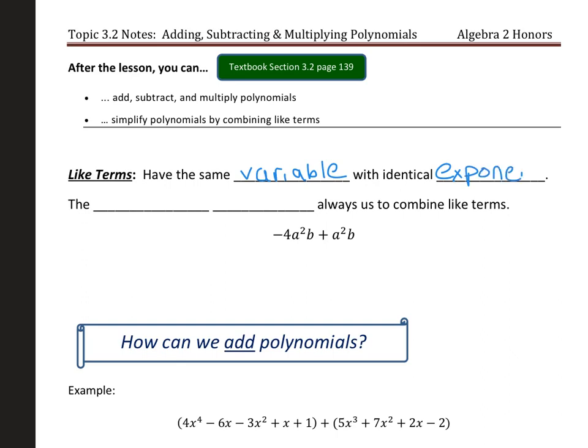And what actually allows us to combine like terms is the distributive property. A lot of people don't think about it that way, but that is what's happening.